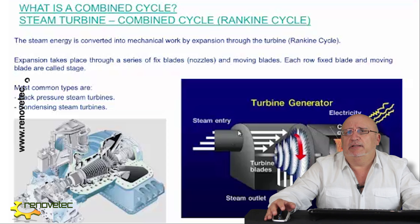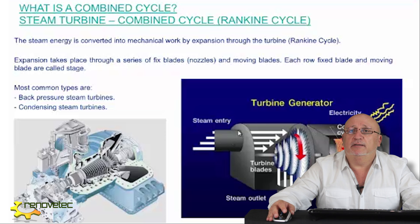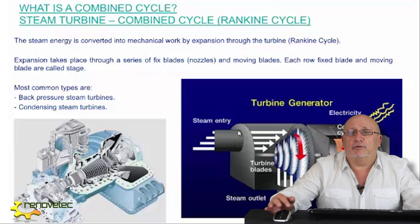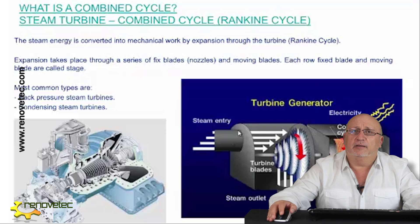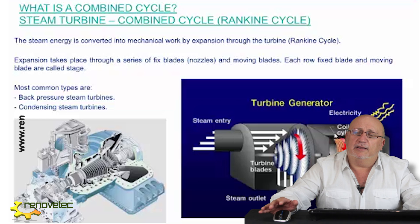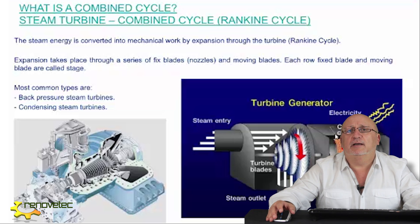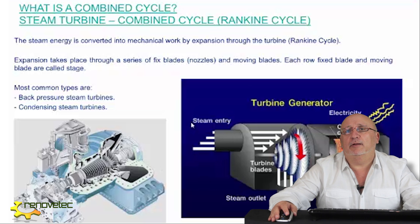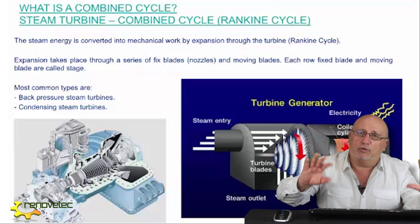The last important element of the combined cycle is the steam turbine. The steam turbine decompresses the steam produced in the HRSG into mechanical rotating energy, which then drives a generator to produce electrical energy. In this turbine we use a different cycle — not the Brayton cycle — the Rankine cycle. One of the elements of the Rankine cycle is the turbine-generator, but the other elements include pumps, a boiler, and a water-steam circuit that closes all the circuits.